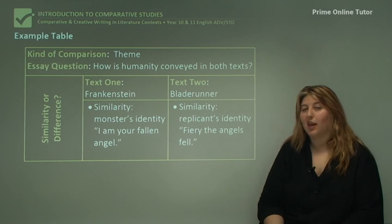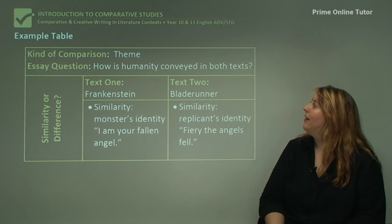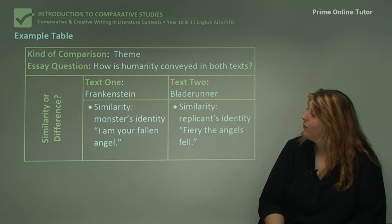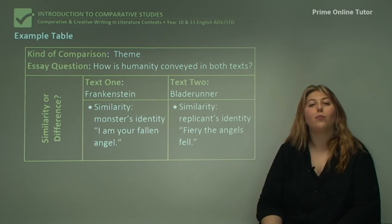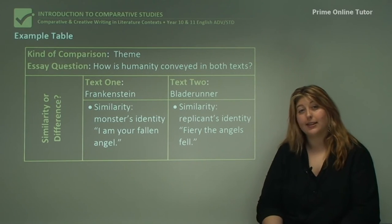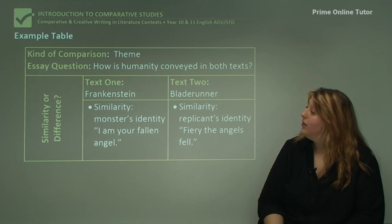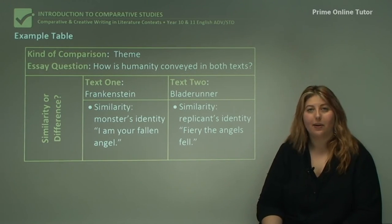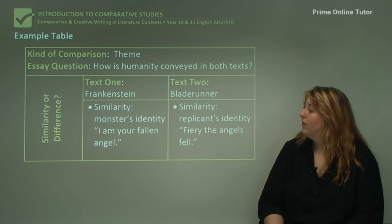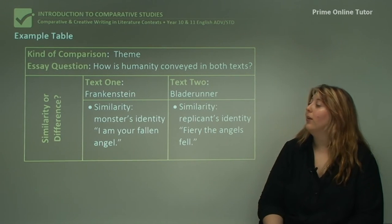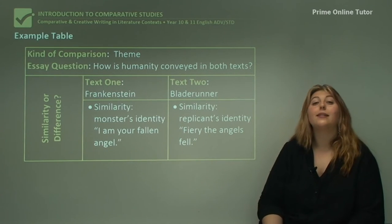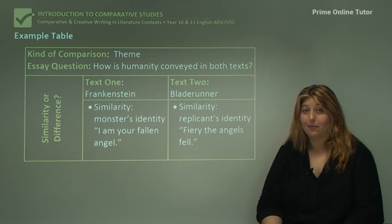For example, if we were thinking about theme, we might have the question: how is humanity conveyed in both texts? These are texts you might actually get in Year 12 — Text 1: Frankenstein, Text 2: Blade Runner. You'd also include the date and the composer's name. In this case, both texts explore the idea of humanity, so it's a similarity — a monster with an interesting identity and a genetic replicant with an interesting identity. You need to back this up with a quote, because there's no point finding the comparison if you can't quote about it in your essay.